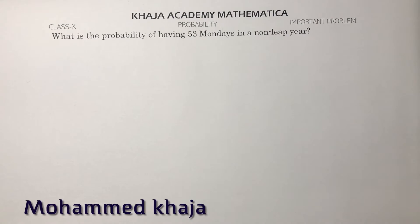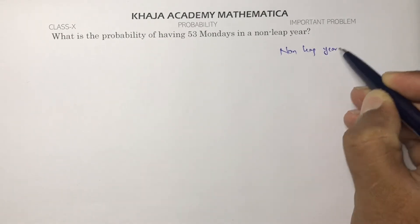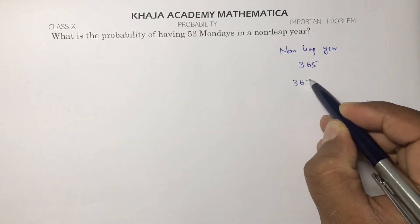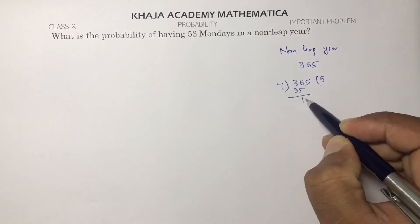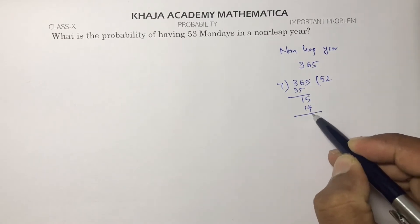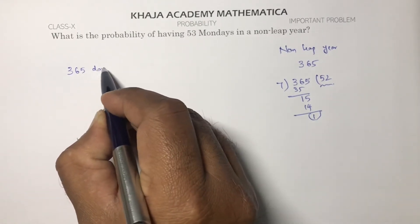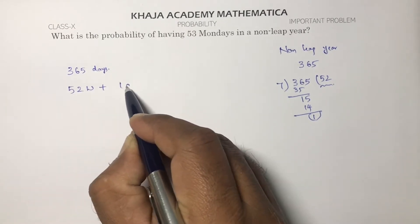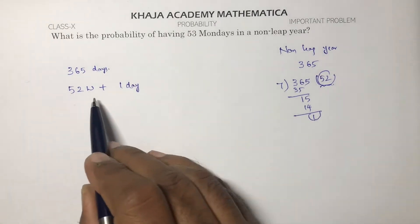What is the probability of having 53 Mondays in a non-leap year? A non-leap year has 365 days. If we divide 365 by 7, we get 52 weeks plus one extra day. So in a non-leap year we have 52 weeks and one extra day.